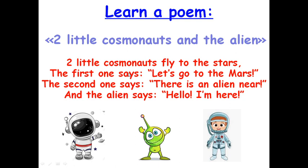Look at the screen, listen to my reading and read after me, line by line at first. Посмотри внимательно на стихотворение, прослушай, как я читаю и прочитай за мной по строчке сначала. Two little cosmonauts fly to the stars.